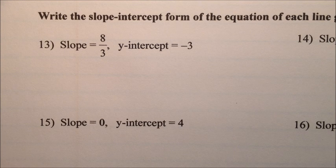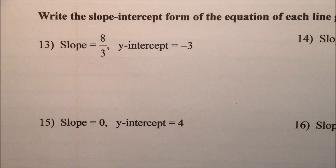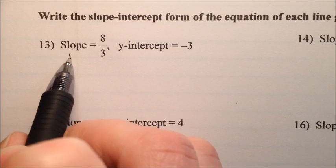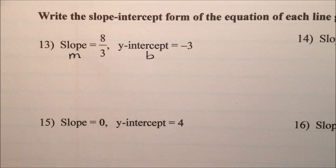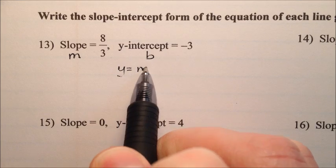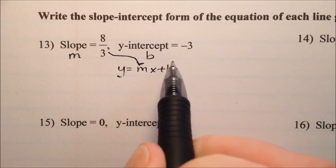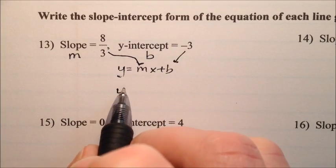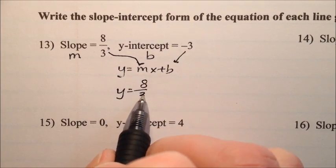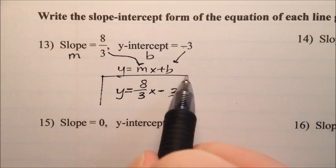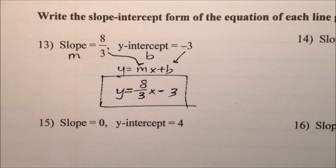In problems 13 through 16, we're given information and will write the slope-intercept form. On number 13, the slope is 8 thirds and the y-intercept is negative 3. The slope is m and the y-intercept is b. Substituting into y = mx + b, we get y = 8/3 x minus 3. Since b is negative, we write minus rather than plus negative 3. So number 13 is y = 8/3 x - 3.